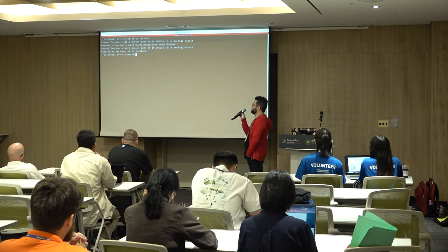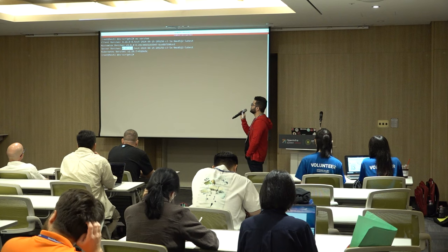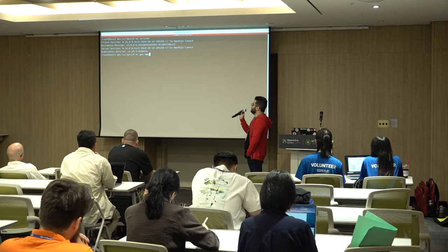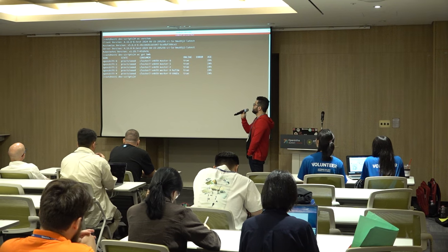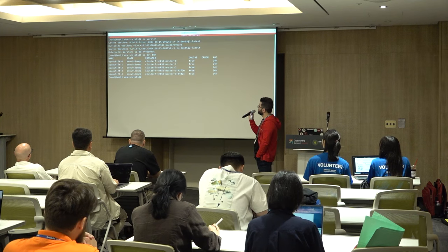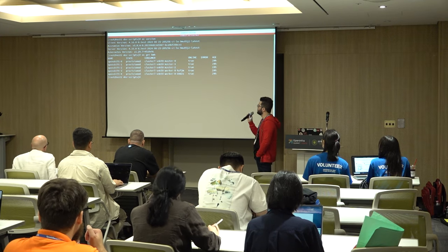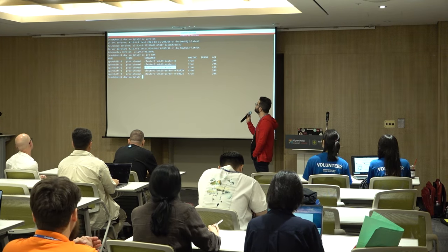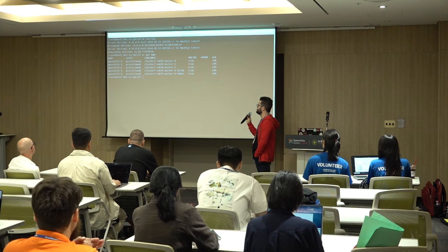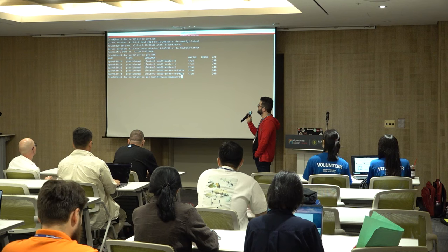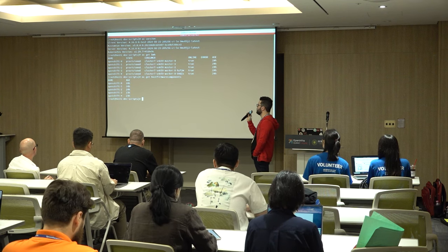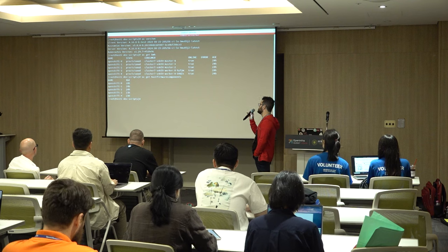I'm showing the version of the cluster we have running. Now I'm listing the bare metal hosts on that cluster — we have five machines: three masters and two workers, already provisioned. Now I'm checking if the host firmware component is available for each bare metal host, and there is a list of them.